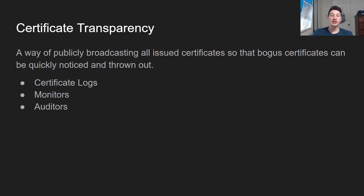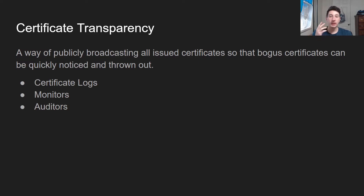Certificate transparency basically does the following: it publicly broadcasts all issued certificates by every single certificate authority, so that bogus certificates can be flushed out. It can't be done instantly, but you can have a process where you can relatively quickly notice these bogus certificates and revoke them. This has basically three main components: certificate logs, monitors, and auditors.